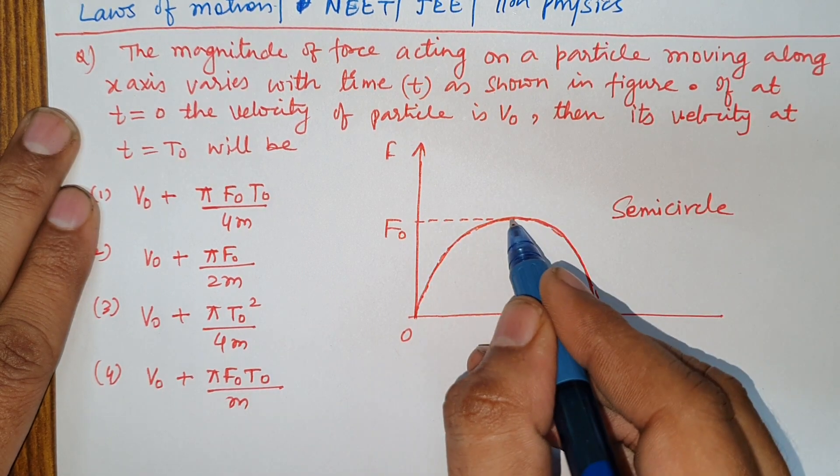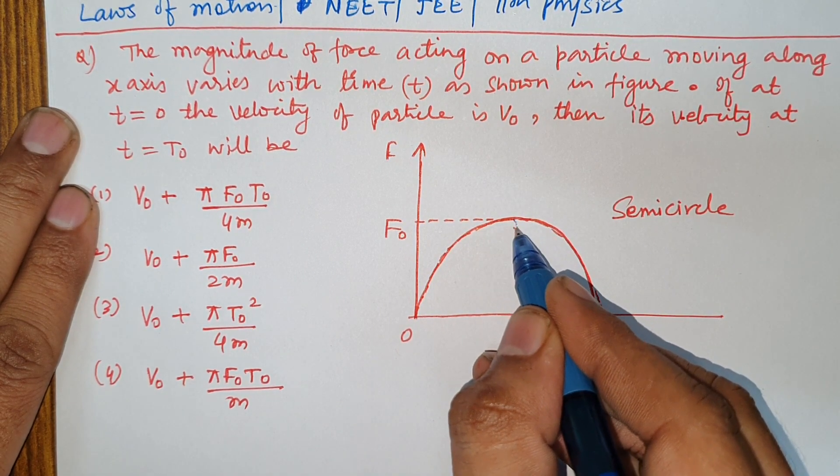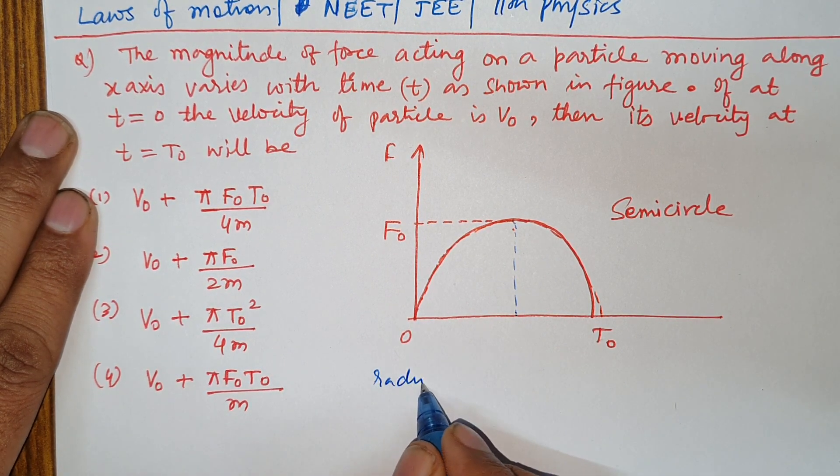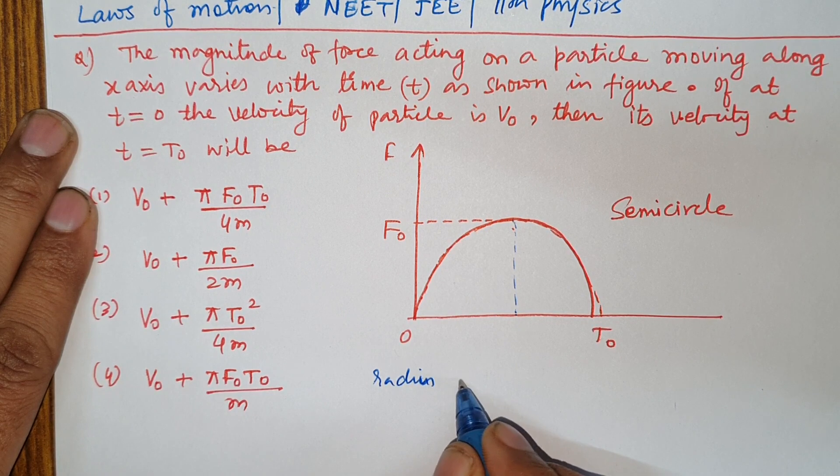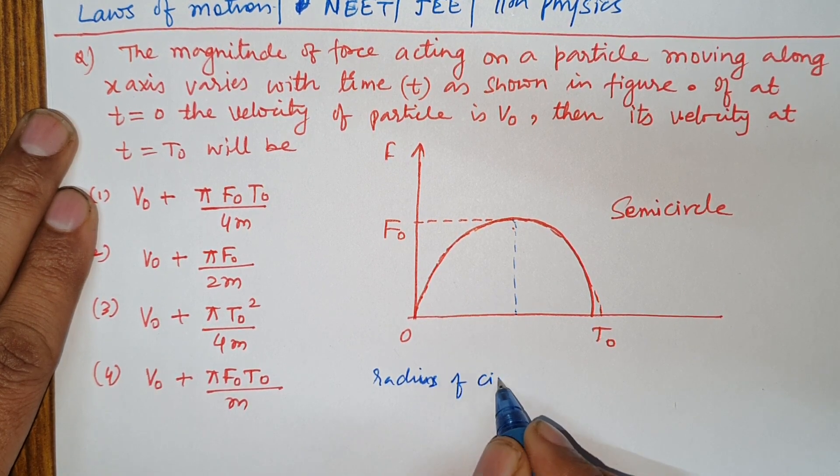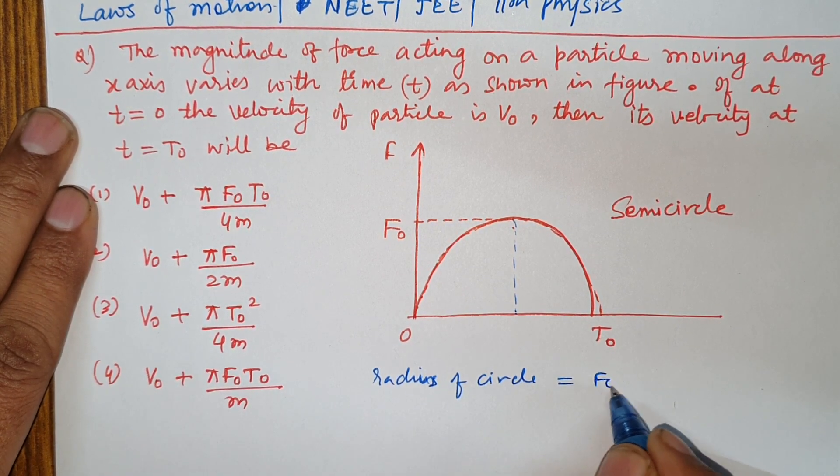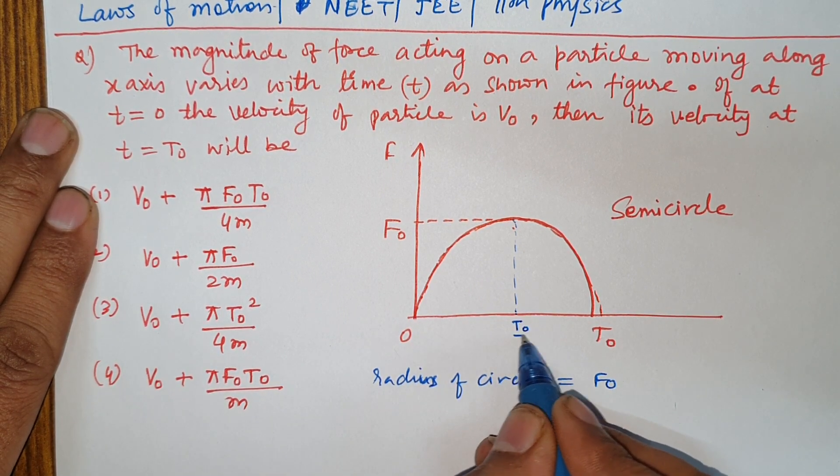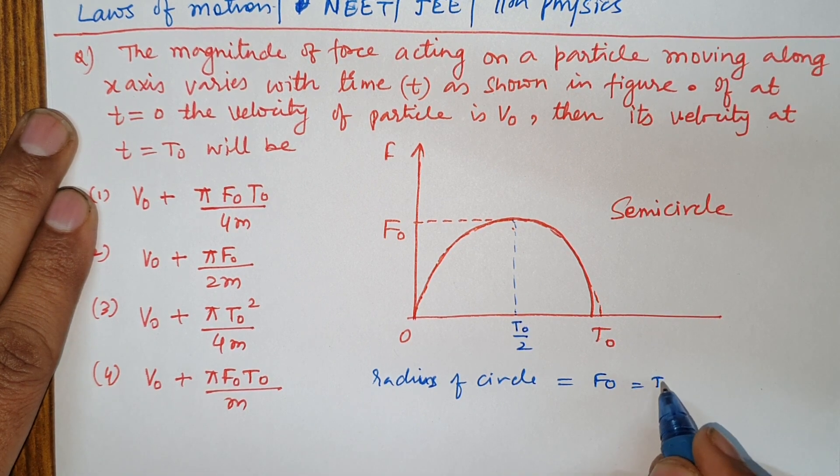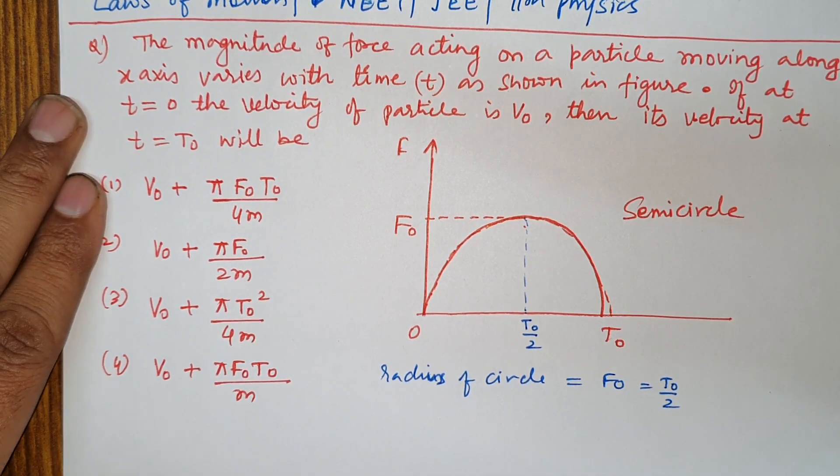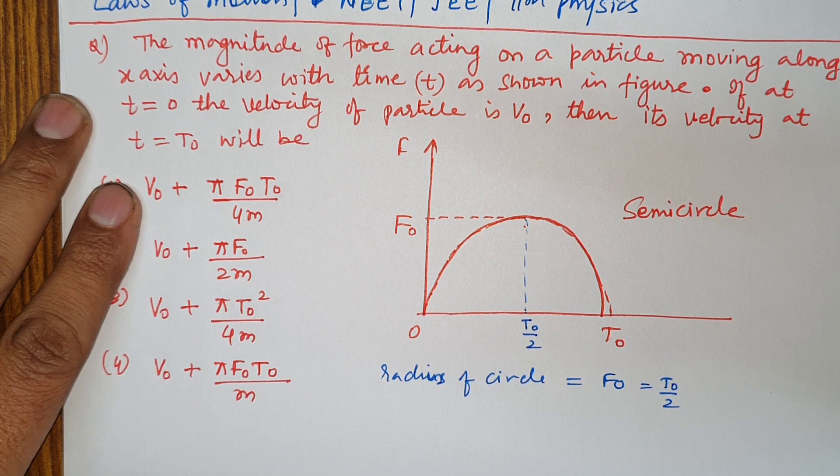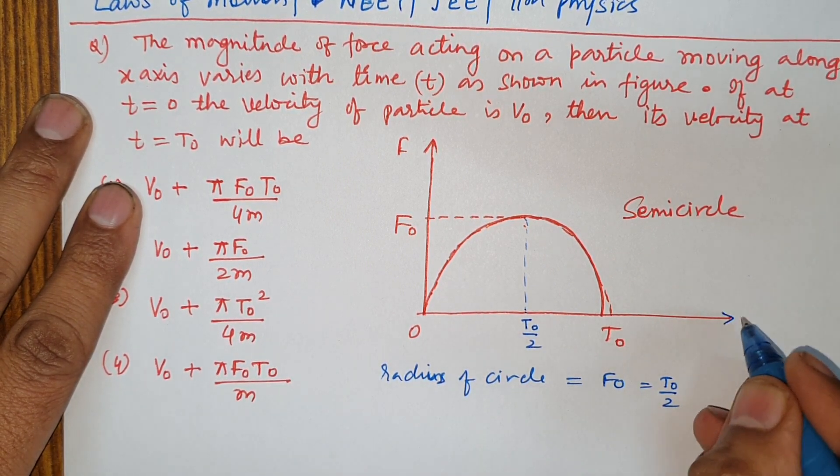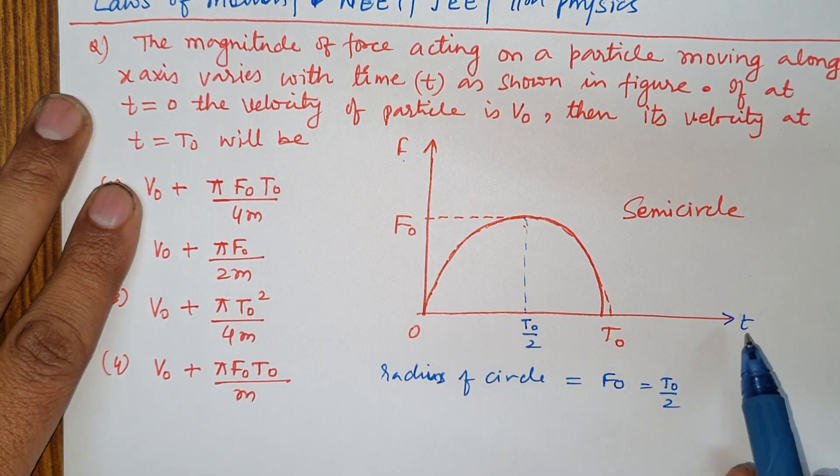What is the diagram of the velocity of the particle? Radius of circle, radius of circle f0. And if we look at radius of circle, t0/2. Okay, if we have time axis and force, force and time axis.